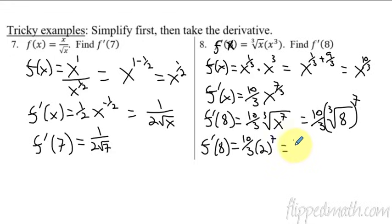Okay, so then this is 10 thirds times 128, which is 1,280 over 3, whatever that is. But that's the, whoops, that is the slope of this weird function when x equals 8.